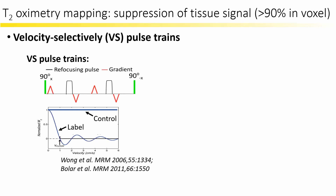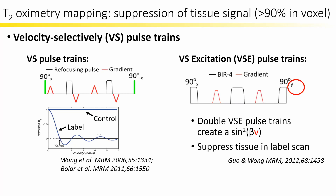In the conventional velocity selective pulse train, the difference imaging between label and control scans suppresses tissue while preserving blood signal. However, in this approach both label and control scans preserve tissue signal, which can induce higher tissue noise in the difference imaging. Dr. Guo and Wang developed a velocity selective excitation (VSE) pulse with a 90-degree phase shift on the flip-back 90-degree pulse. Two of these VSE pulses create a sine-squared modulation on velocity and can suppress tissue in the label scan.